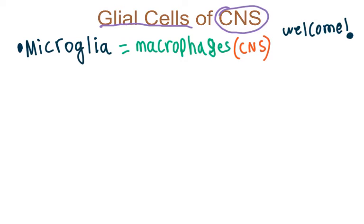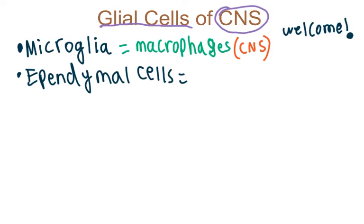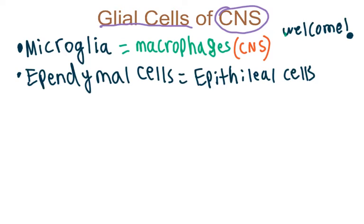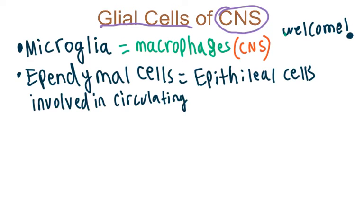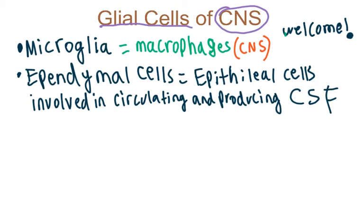Our next glial cell is ependymal cells. Ependymal cells are epithelial cells that are involved in circulating and producing cerebrospinal fluid throughout the brain. So cerebrospinal fluid is circulated and produced by the ependymal cells.